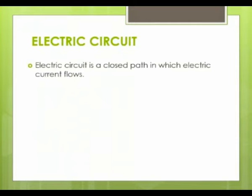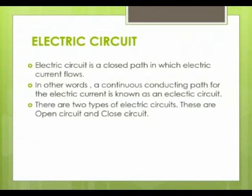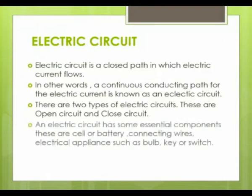Electric circuit is a closed path in which electric current flows. In other words, a continuous conducting path for the electric current is known as an electric circuit. There are two types of electric circuits: open circuit and closed circuit. An electric circuit has some essential components — these are a cell or battery, connecting wires, an electrical appliance such as a bulb, and a key or switch.